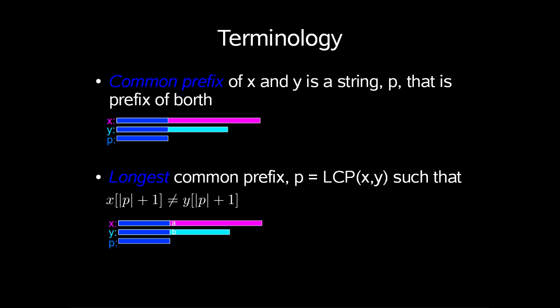First of all, let's look at some basic terminology. A common prefix of x and y is a string p that is a prefix of both, illustrated as this. The longest common prefix is where p equals LCP(x,y), such that x[|p|+1] is not equal to y[|p|+1].